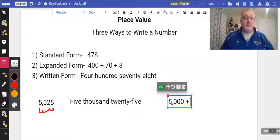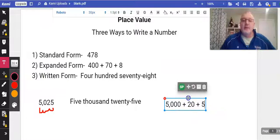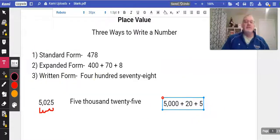But I do have the 2 which is in the 20, which is in the tens place, and then I also have my 5 which is in the ones place. So 5,000 plus 20 plus 5. So that's it. They want you to be able to convert from one place to another.